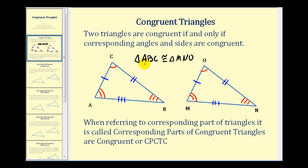The order in which we list these vertices is important. Vertex A corresponds to vertex M, vertex B corresponds to vertex N, and vertex C corresponds to vertex O. So the order in which we list these triangles is important. When referring to corresponding parts of triangles, it is called corresponding parts of congruent triangles are congruent, or for short, CPCTC.